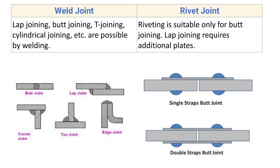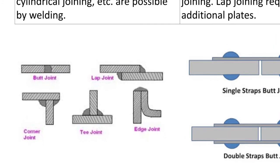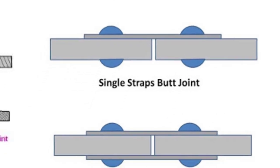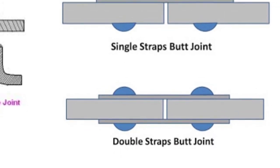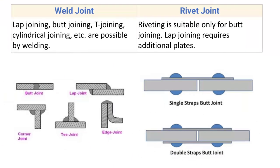For weld joint, lap joining, butt joining, T joining, cylindrical joining, and corner joints are all possible. Riveting is suitable only for butt joining; lap joining requires an additional strap plate. Here you can see the single strap butt joint and double strap butt joint used in riveting.